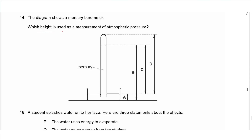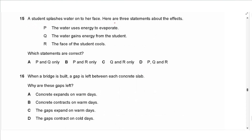Question 14 says: the diagram shows a mercury barometer. Which height is used as a measurement of atmospheric pressure? It is from the top of the mercury in the barometer to the top of the mercury in the dish. The answer is C.